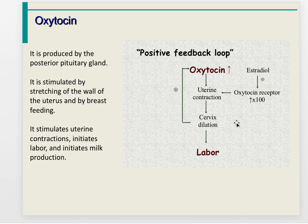Oxytocin is the other hormone produced by the posterior pituitary gland. It is stimulated by stretching the wall of the uterus and by breastfeeding. It stimulates uterine contractions, initiates labor, and initiates milk production.